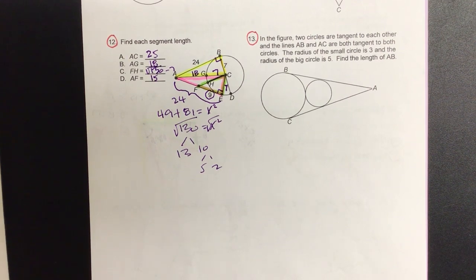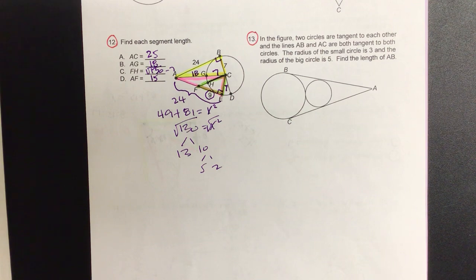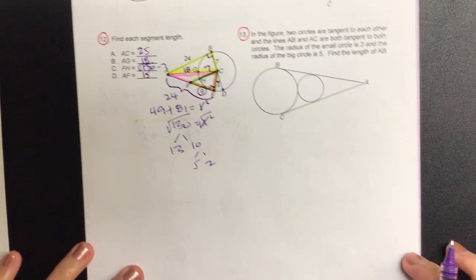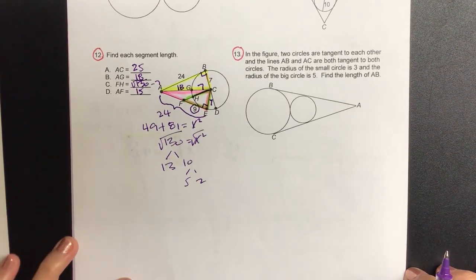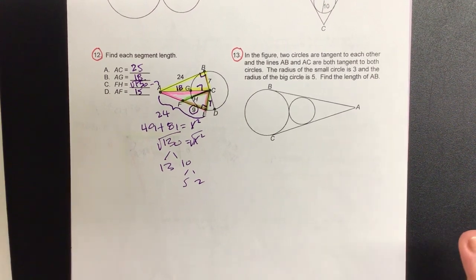I think the only confusing thing is that there's a lot of triangles jumbled on top of each other. So if you want to separate on the side, go for it. But if you don't need to, that's fine too. All right. 13.